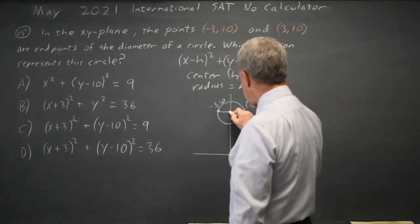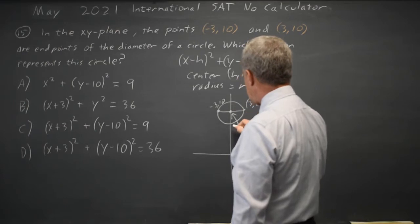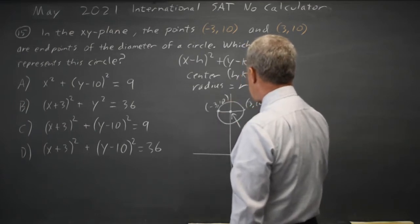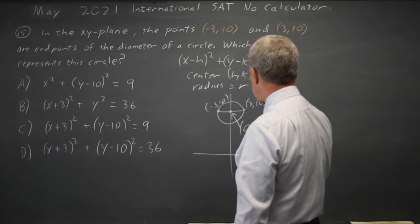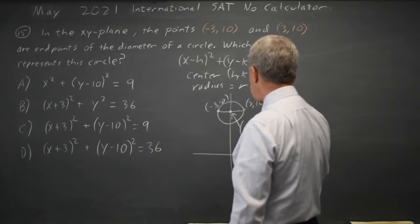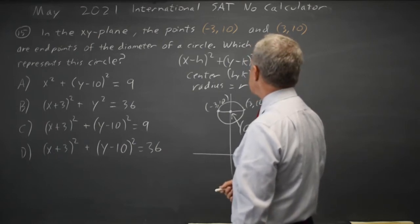The x-coordinate of my midpoint is halfway between negative 3 and positive 3, which will be 0. The y-coordinate will be the same as both endpoints, which is 10. So the center is 0, 10.